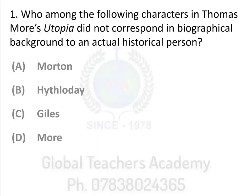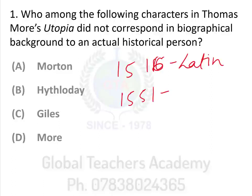A little bit about Thomas More's Utopia. The text was written in 1516 in Latin. It was translated in 1551 by Ralph Robinson into English. The term 'Utopia' as we understand it now — a text that talks about a land that is better than your actual world — comes for the first time from Thomas More's text itself.